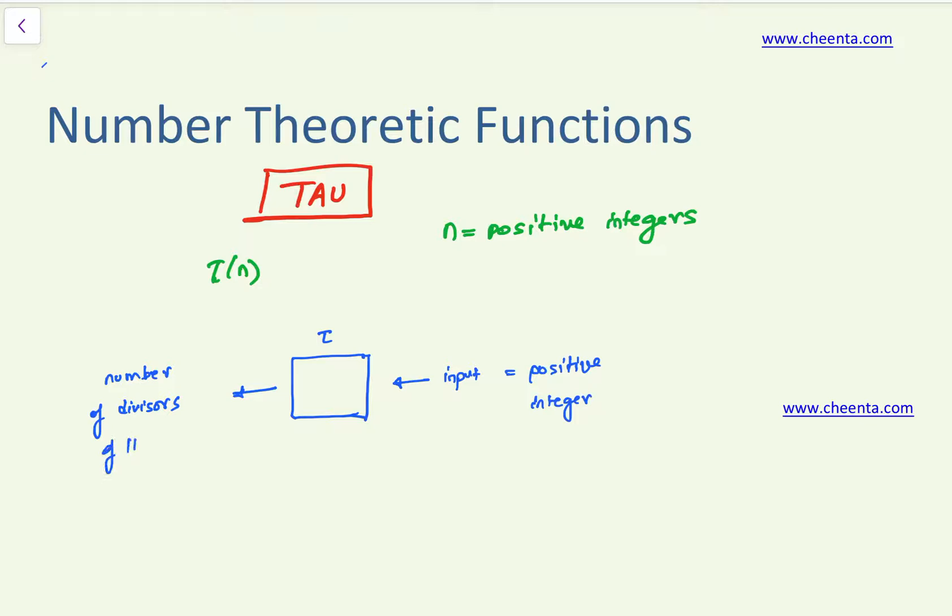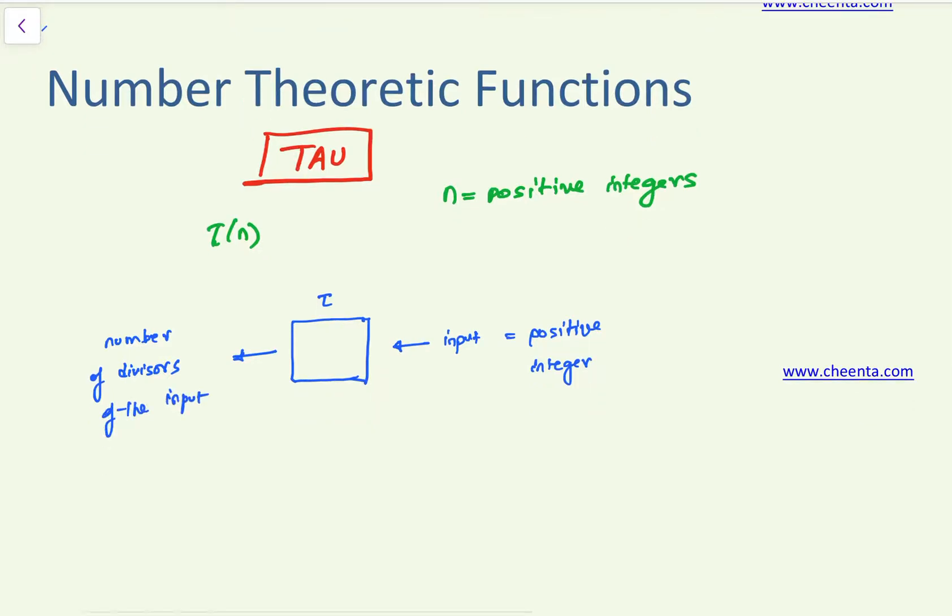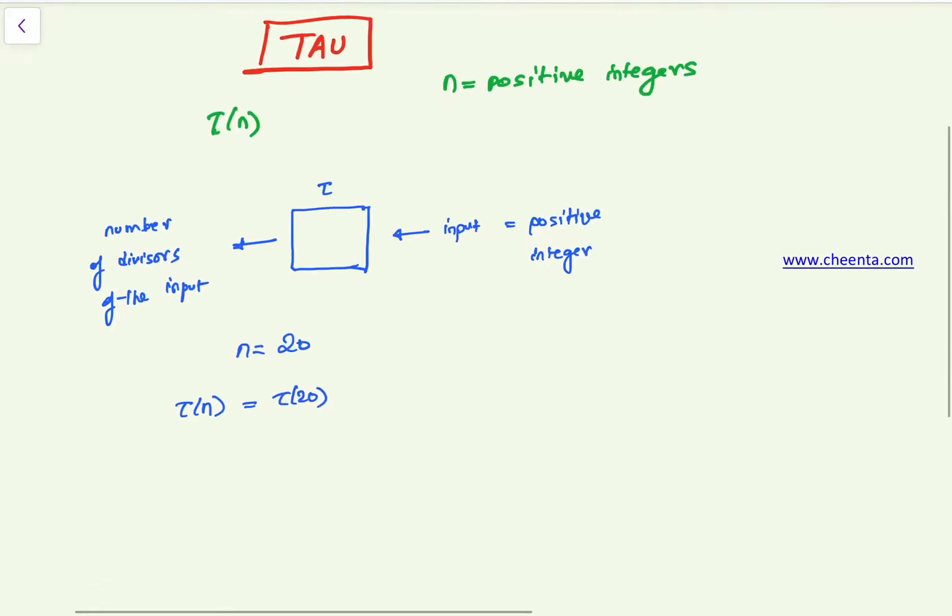And gives out the number of divisors of the input, the number of divisors or factors of the input. So let's take one concrete example: suppose n equals 20. So what is tau of n, or what is tau of 20?